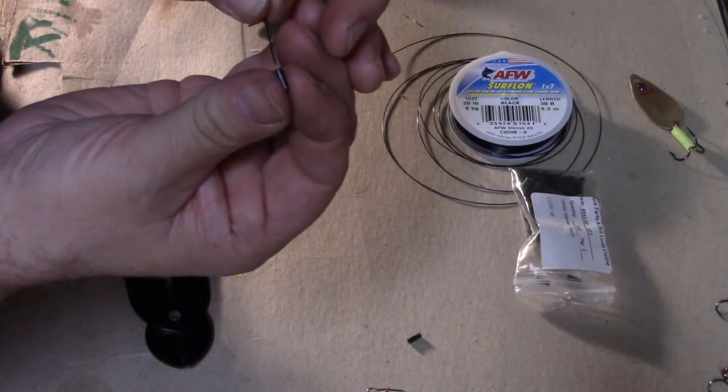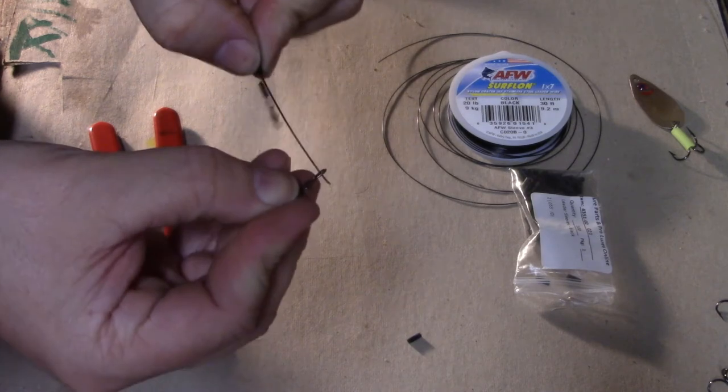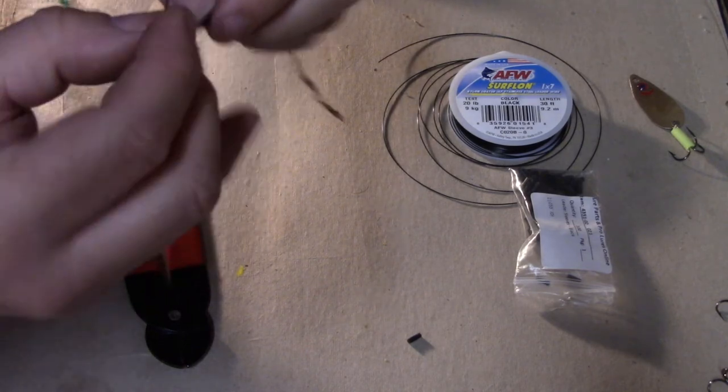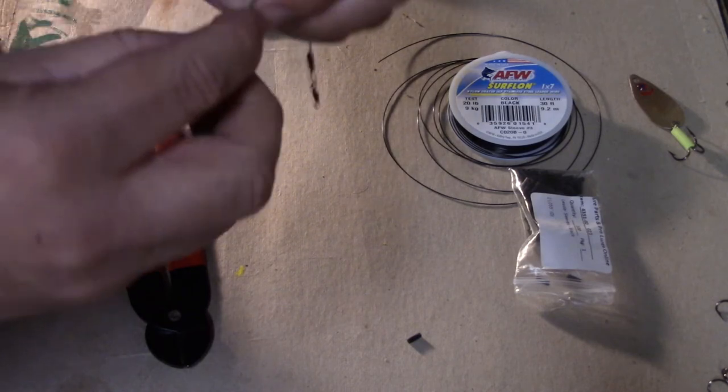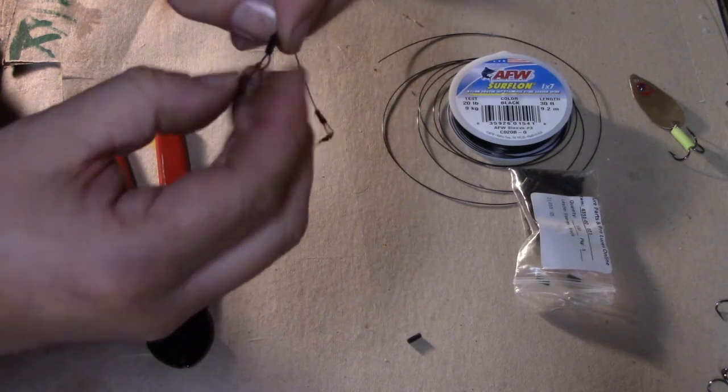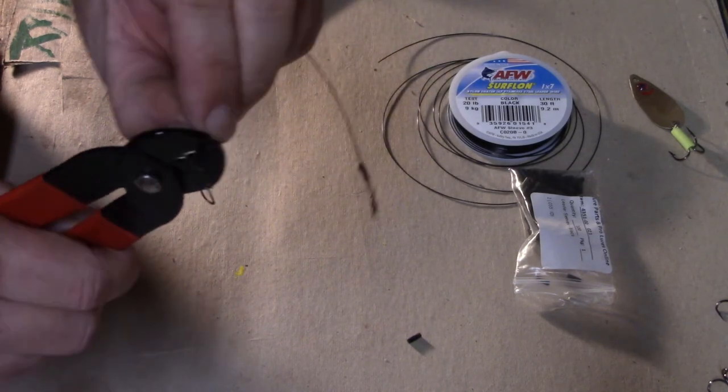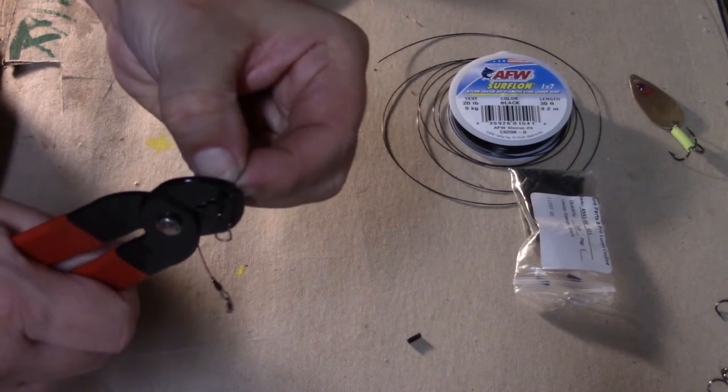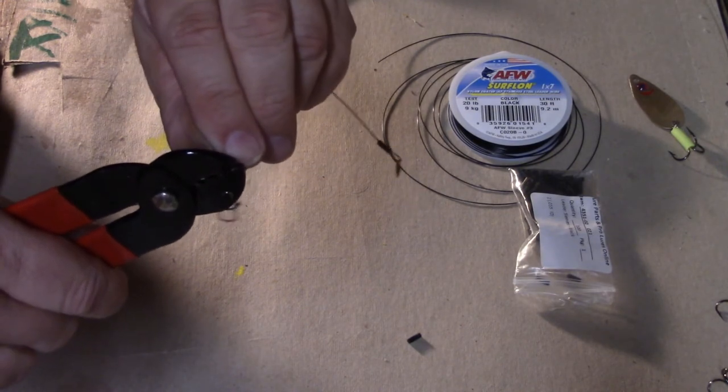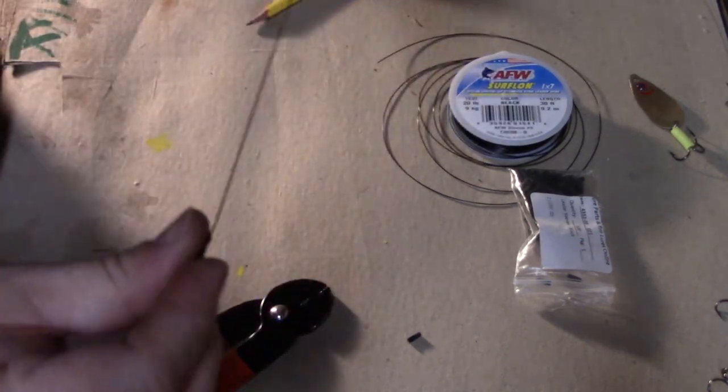Same thing on the other side. Just put the sleeve on, put your snap on, bend it around, stick it through, pull on your longer end, and you are set to crimp. Rotate it halfway, push it to the other end, and crimp again. There is a leader.